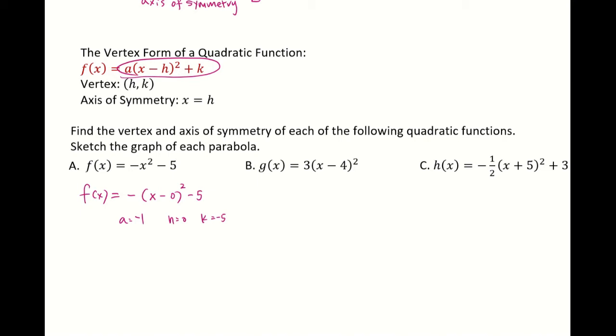This will be a parabola facing down because a is negative. Your vertex will be (0, negative 5) and your axis of symmetry will be the line x equals 0.